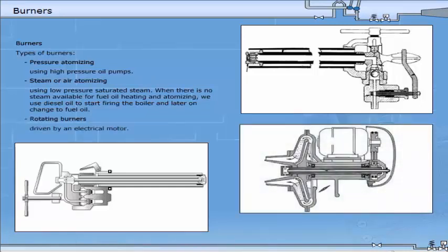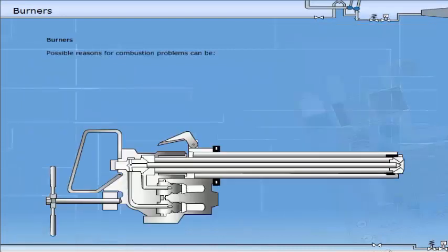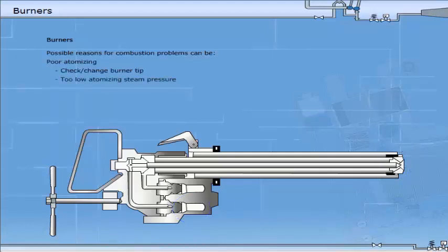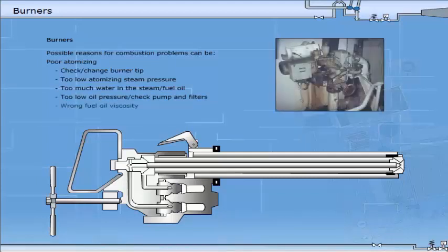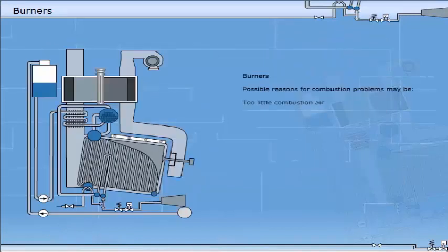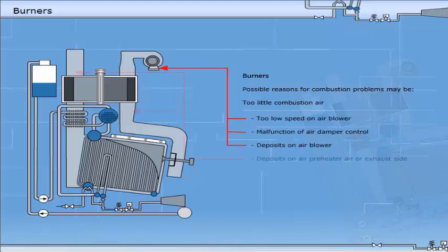Rotating burners driven by an electrical motor. Possible reasons for combustion problems can be poor atomising, check or change burner tip, too low atomising steam pressure, too much water in the steam fuel oil, too low oil pressure, check pump and filters, wrong fuel oil viscosity, too little combustion air, too low speed on air blower, malfunction of air damper control, deposits on air blower, deposits in the air preheater air or exhaust side, tuning of air-oil ratio controller, or deposits on economiser.